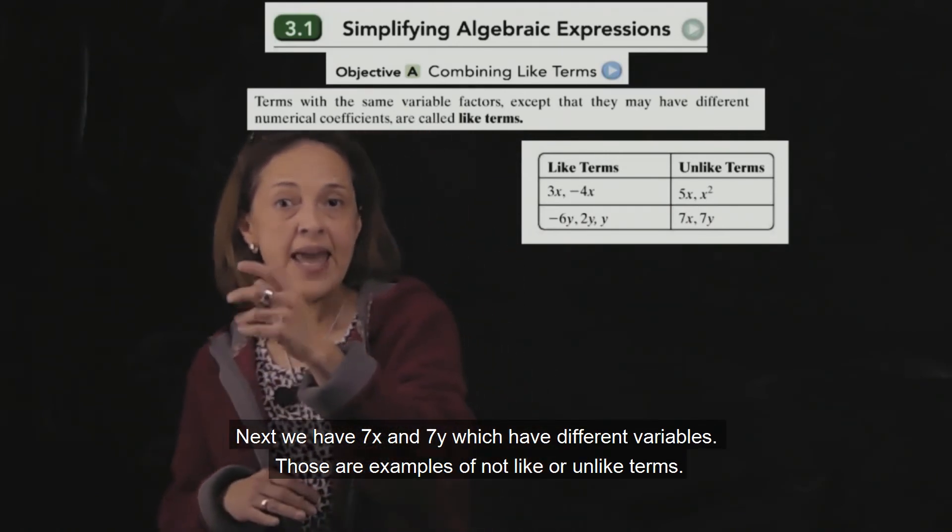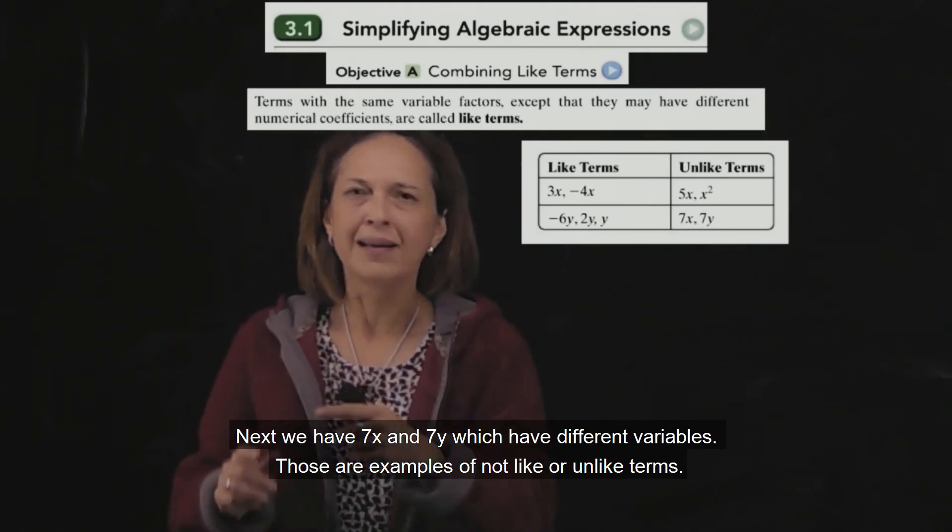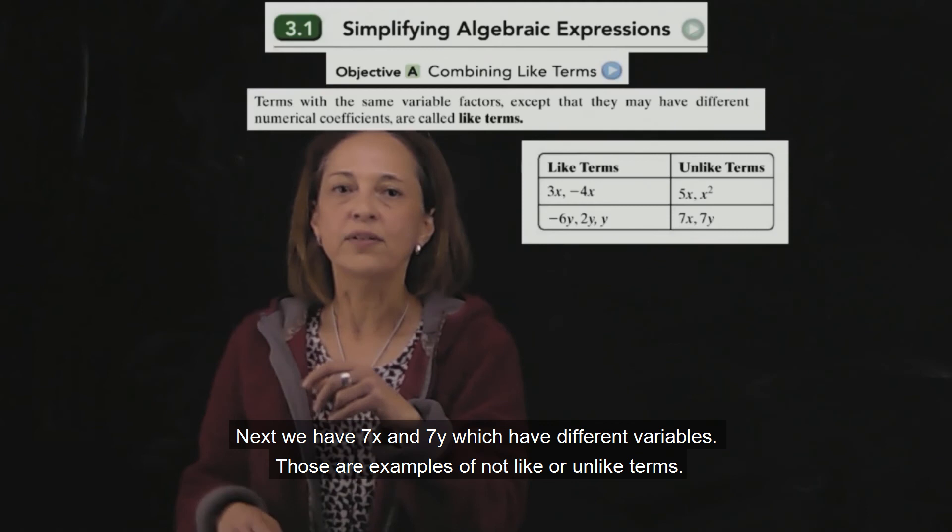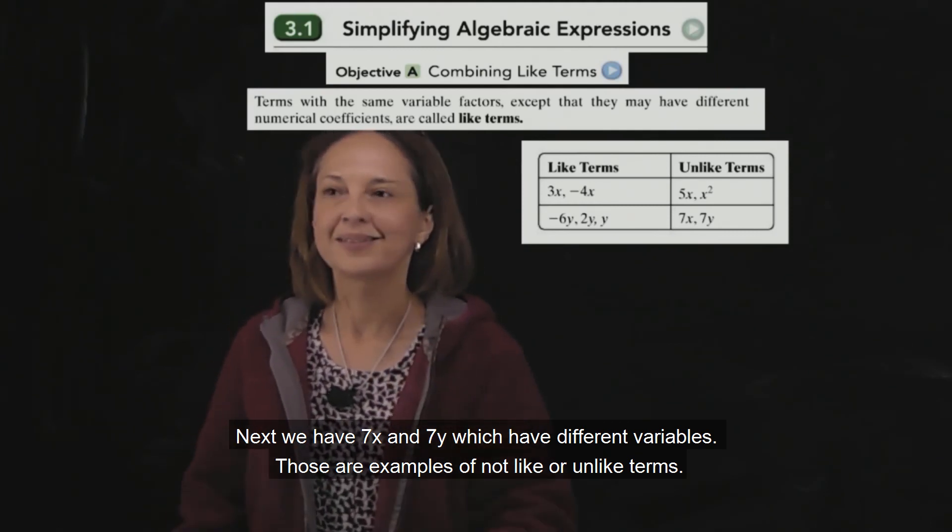The next, 7x and 7y, different variable. Those are examples of not or unlike terms.